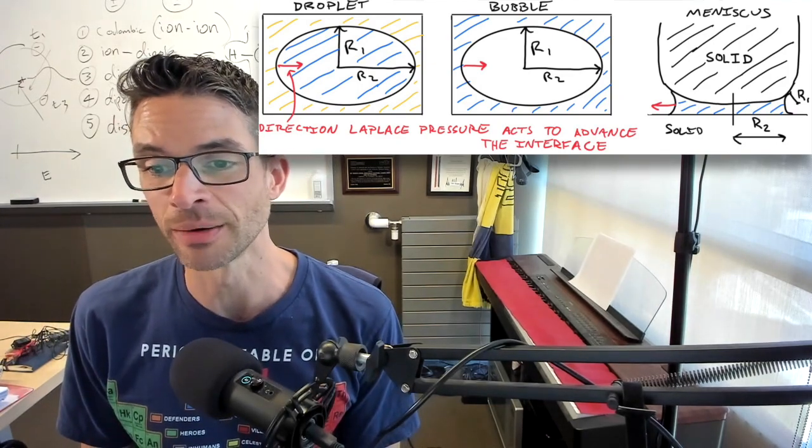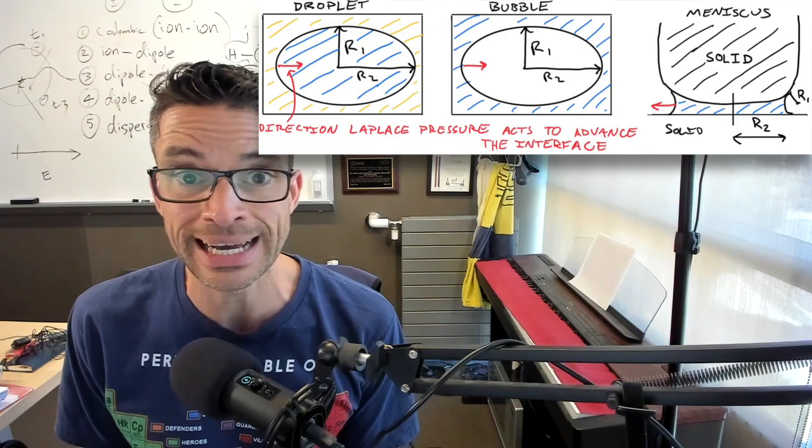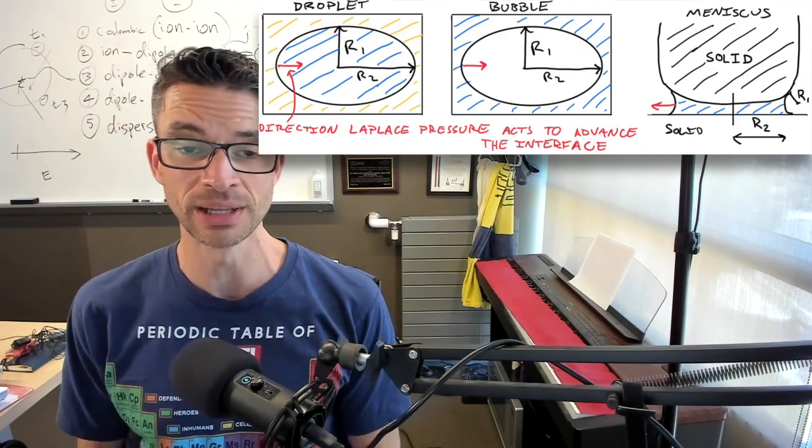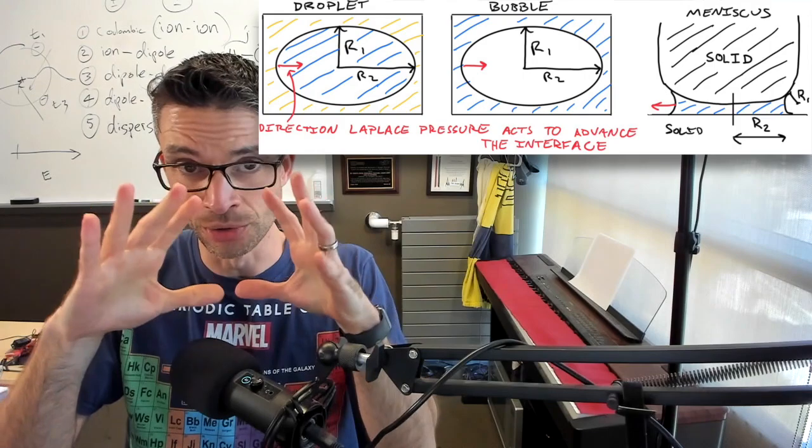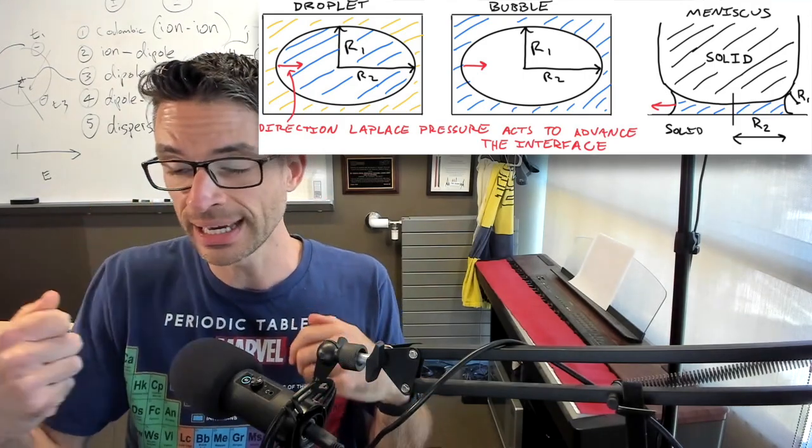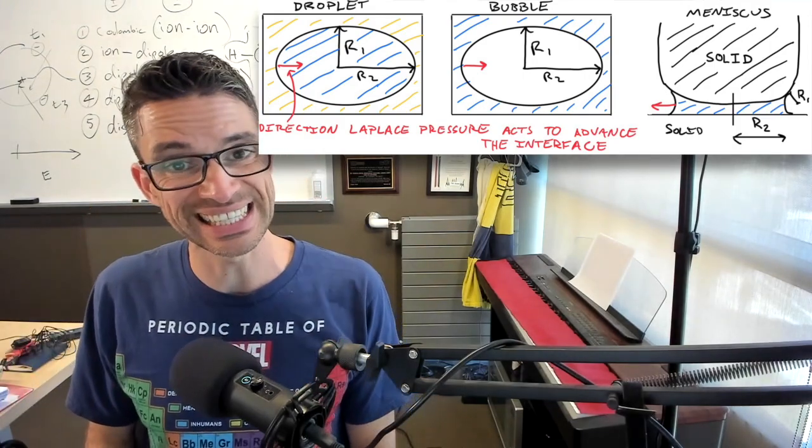This could be a bubble of gas inside a liquid, or it could be a soap bubble, like you blew from a wand when you were a kid. Or it could be a meniscus.